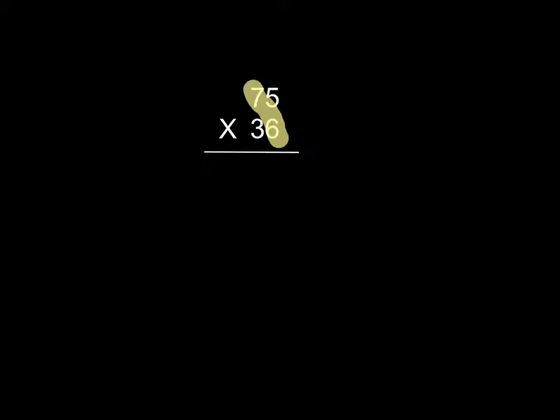After that, we're going to multiply six times seven. That'll take care of the number in the six, the number in the ones column.